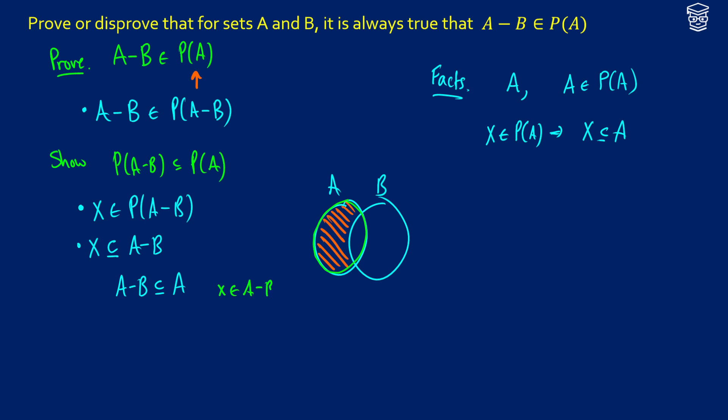We assume that X is in A minus B. This means that X is in A and X is not in B. But more importantly, X is in A. Therefore, that's the proof.